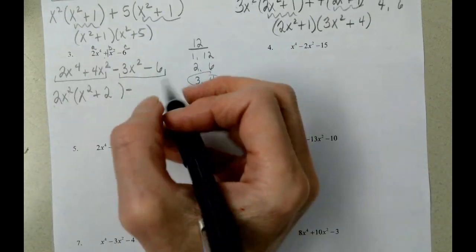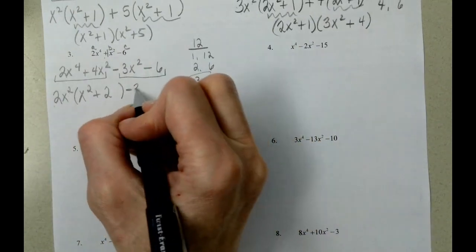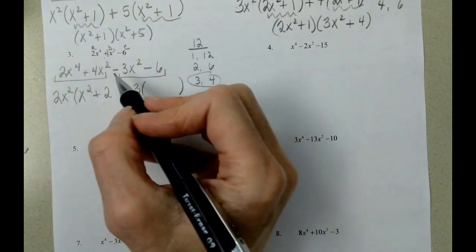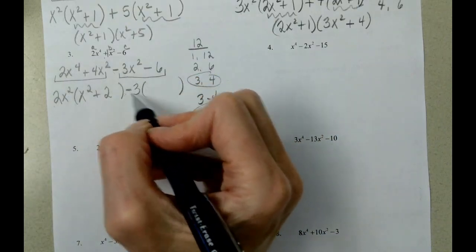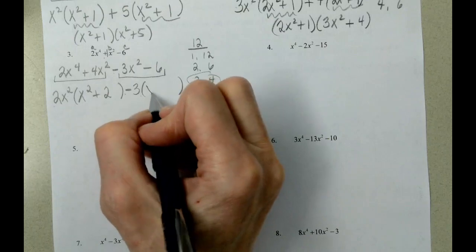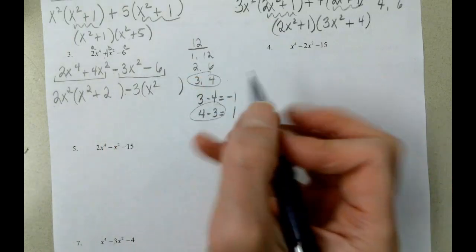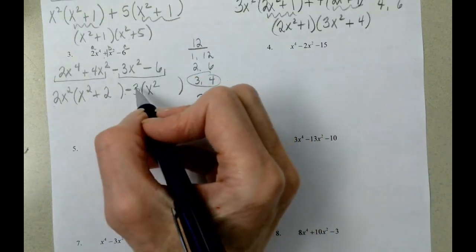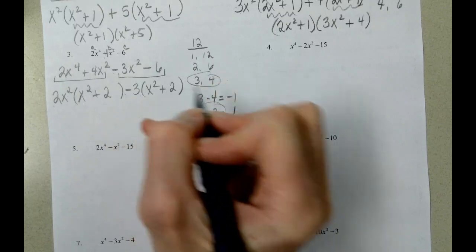In our next group, the biggest number that divides into 3 and 6 is 3. Negative 3 divided by negative 3 is 1. x squared. Negative 6 divided by negative 3 is positive 2.